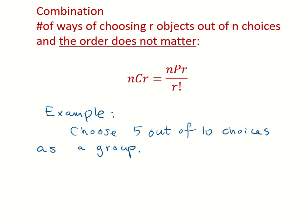Let's look at one example. Here, say I want to choose 5 objects out of 10 choices as a group. So here the order does not matter. The number of ways of choosing is 10C5. We will use combination here. To calculate this, we have 10 times 9 times 8 times 7 times 6.